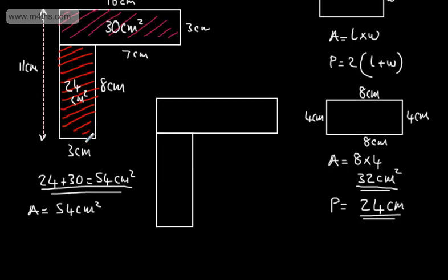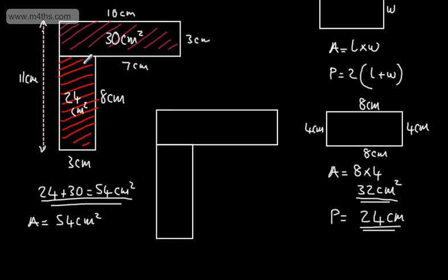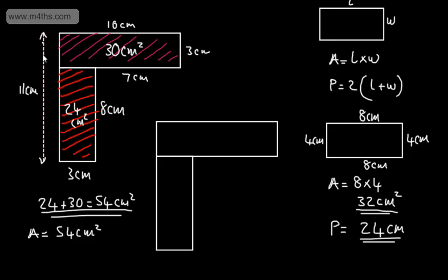For the perimeter, we collect up all the side lengths and add them. The perimeter is the distance round the outside: 10 plus 3 is 13, plus 7 is 20, plus 8 is 28, plus 3 is 31, plus 11 gives us 42 centimetres.